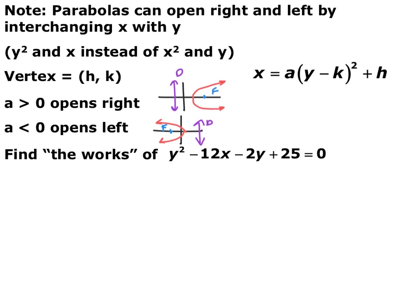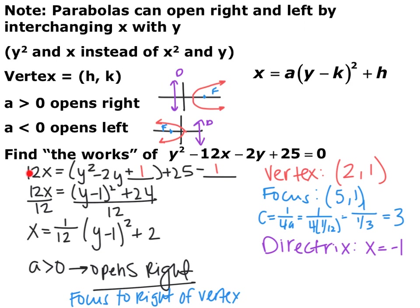Move the 12x linear term to the other side: equals y squared minus 2y plus [space] plus 25 minus [space]. Divide by 2 and square it — these are going to be ones. You end up with x equals 1/12 times (y minus 1) squared plus 2. With a equals 1/12 being positive, it opens to the right, so the focus is to the right of the vertex. The vertex is (2, 1) — note that h and k are switched because x and y are switched. The c value is 1 over 4a, where a is 1/12, so c equals 1 over (1/3), which is 3.